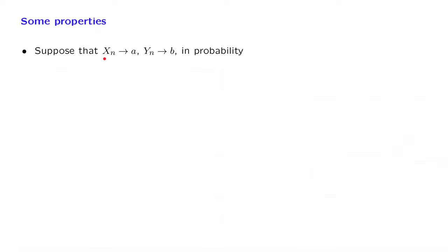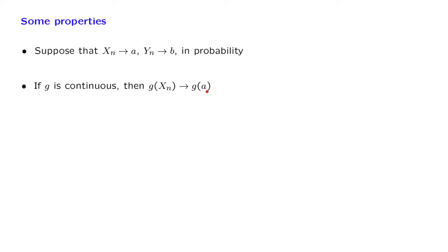We point out a few useful properties of convergence in probability that parallel well-known properties of convergence of sequences. Suppose we have a sequence of random variables that converges in probability to a certain number a, and another sequence that converges in probability to some other number b. We do not make any assumptions about independence — we do not assume that the xn's are independent of each other, or that the sequence of xn's is independent of yn. If g is a continuous function, then the function of the random variables converges to the function of the number; for example, xn squared converges to a squared. Another fact is that the sum of these two random variables converges to the sum of their limits. Both properties are analogous to what happens with ordinary convergence of numbers.